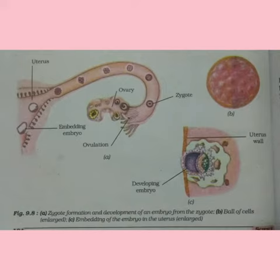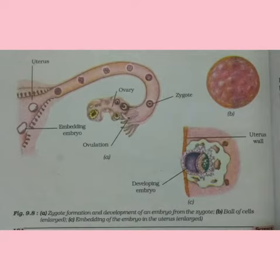Students, pay attention on figure 9.8c. There you can find an embryo embedded in the lining of the uterus. This process whereby the embryo gets embedded in the uterine wall is called implantation. It is an essential process because further development of the embryo takes place in the uterus.